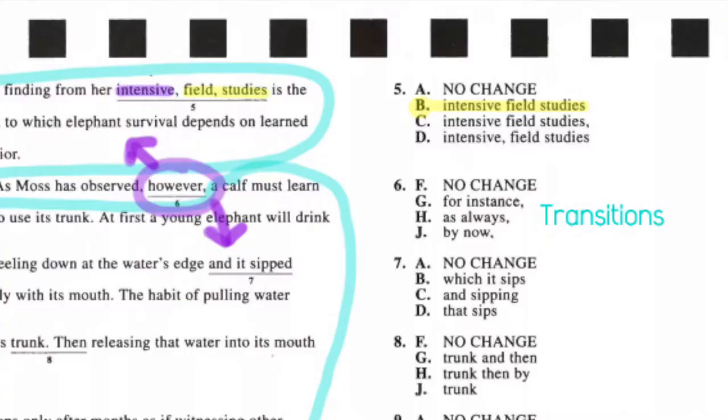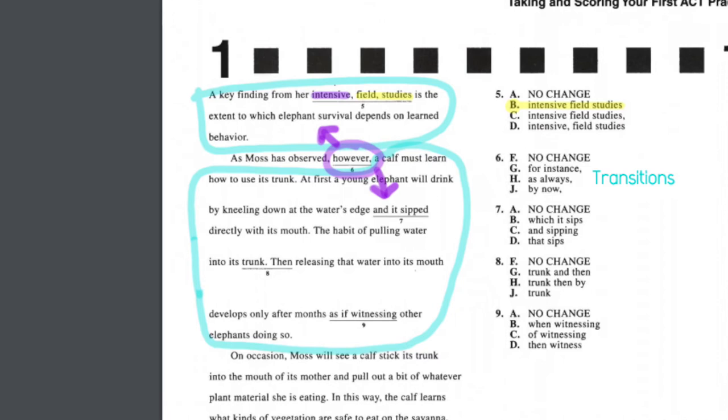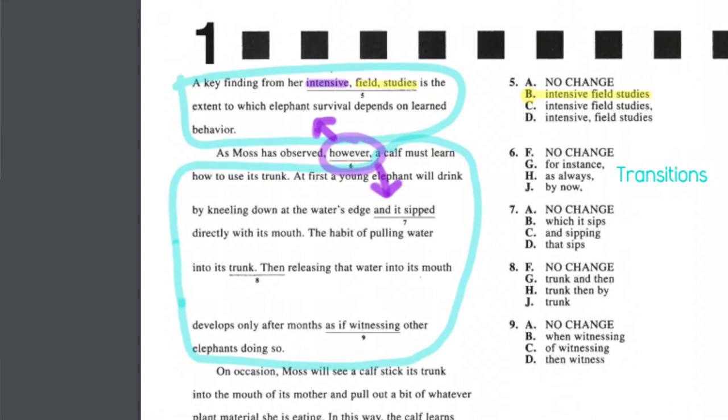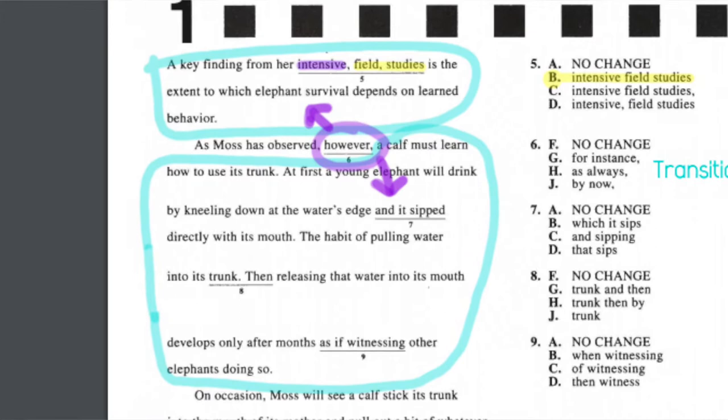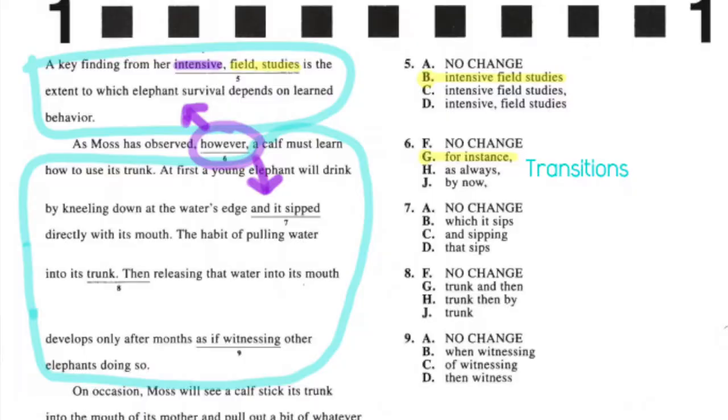Question six is a rhetorical transition question. The options are 'however,' 'for instance,' 'as always,' and 'by now.' 'However' is an opposing transition. 'For instance' signals an example. 'As always' and 'by now' are time transitions. Looking at the passage, the text before the transition discusses how elephant survival depends on learned behavior, and after the transition it gives the example of a calf learning to use its trunk. Since we're going from a point to an example, the answer is G — 'for instance.'